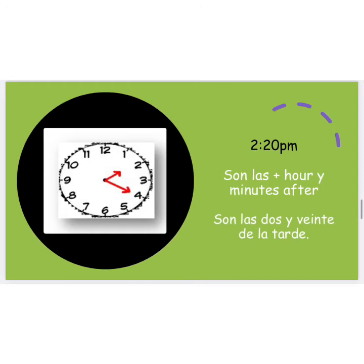So we have son las and we're dealing with the hour of 2, so we put dos — son las dos. But it doesn't stop there. We want to say it is 2:20, 20 minutes after 2. So the next step is to put E followed by the number of minutes after. How many minutes after 2 is it? 20. So we put E veinte. That is why the full sentence is son las dos y veinte de la tarde.